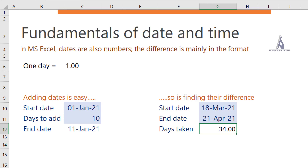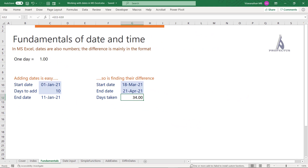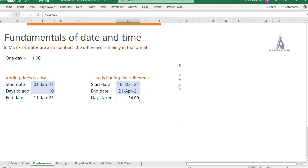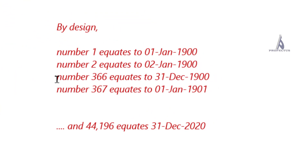What is 44,196 or 34? MS Excel dates start from 1st January 1900, which has a value of 1. 2nd January 1900 is 2, 3rd January is 3, and so on. So 366 equals 31st December 1900, and 367 is 1st January 1901. 31st December 2020 is 44,196 because it is 44,196 days since 1st January 1900.